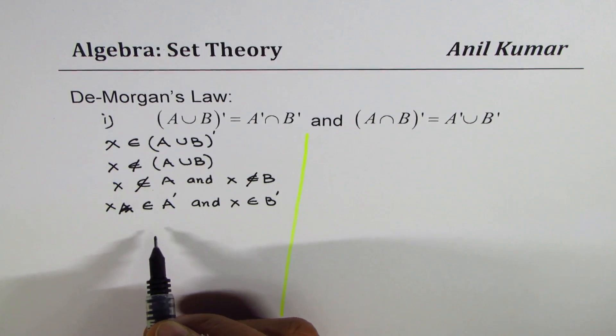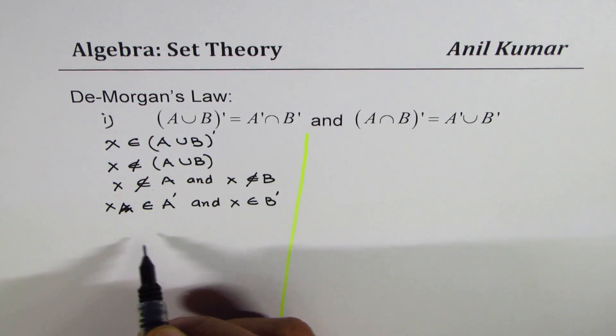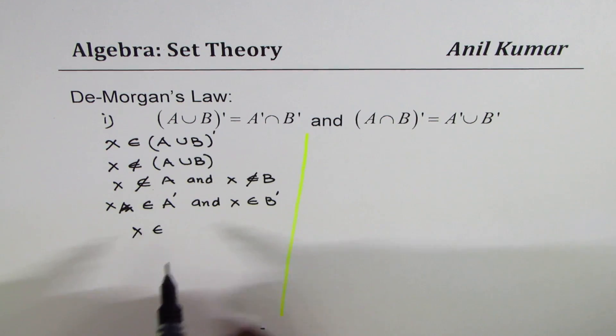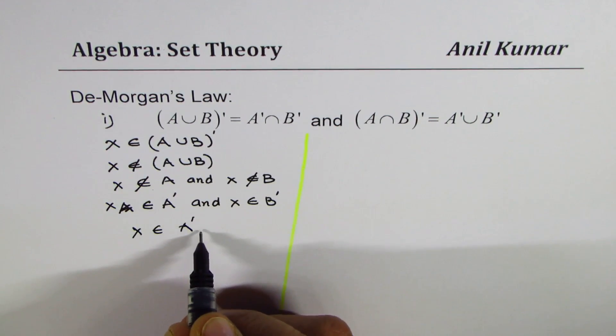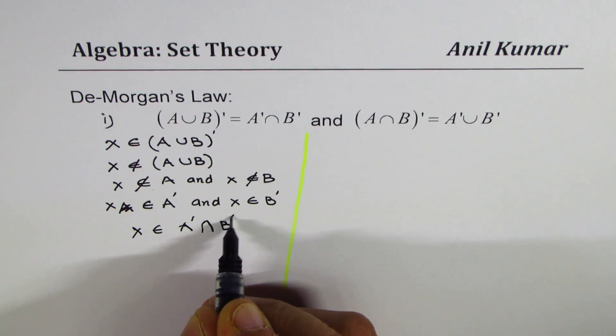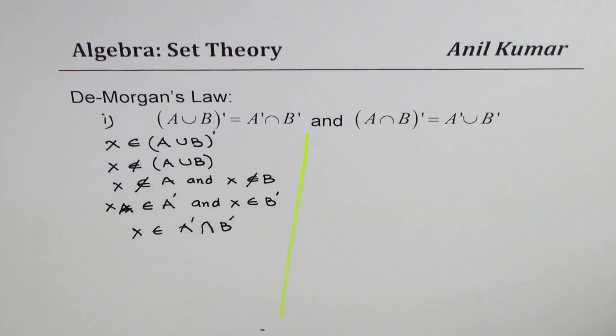With that, we can say that x belongs to A complement intersection B complement. So that is how you can prove it.